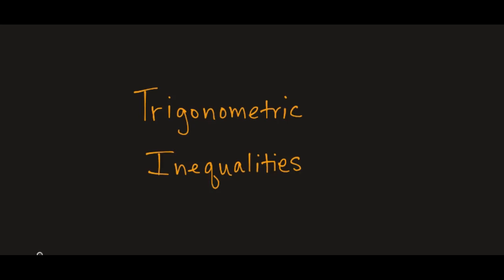In this video, we're going to discuss trigonometric inequalities. These are going to start off very similar to trig equations. We are going to bring everything to one side, set it equal to zero, and solve that trig equation. Then we can use one of two tools to solve the inequality: we can use the graph if it's easy enough to visualize, or we can use a sign chart like we often did in regular inequalities when we were solving things with multiple terms.